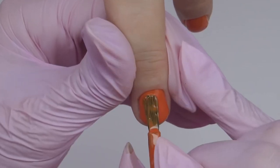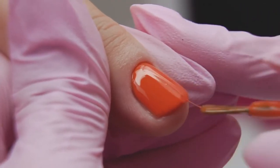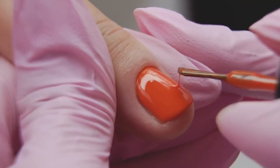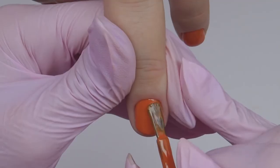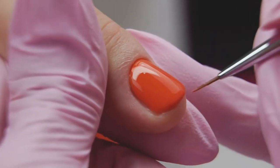I turn the brush and grab some more color for density. Make long moves from the cuticle to the free edge. The brush is parallel to the nail plate. I don't lower it down. You can fix the coating with a thin brush.